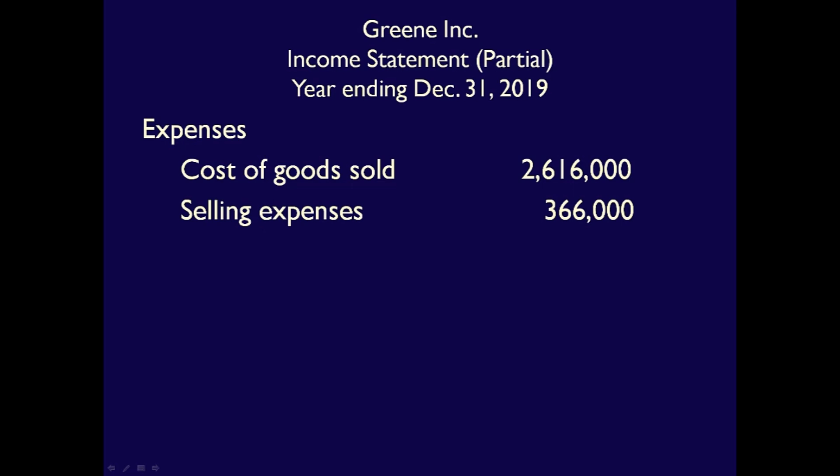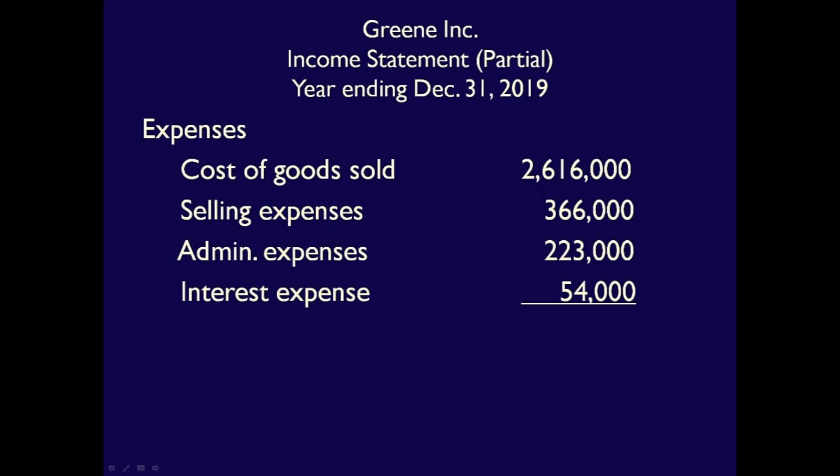Cost of goods sold of $2,616,000 to represent the costs incurred by the production department. Selling expenses of $366,000 to represent the costs incurred by the sales and marketing departments. Administration expenses of $223,000 to represent the costs due to the administration department. And finally, interest expense of $54,000. Total expenses for Green Inc. would be $3,259,000.